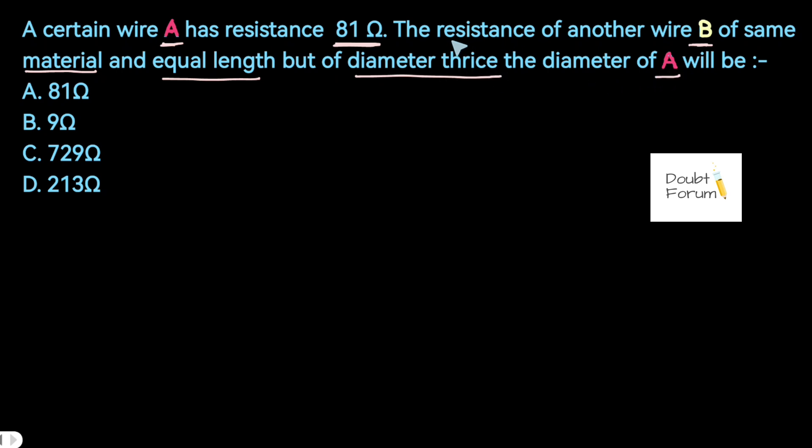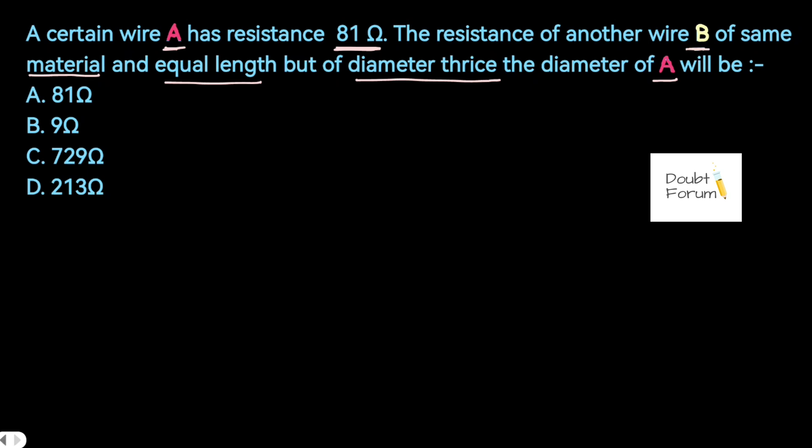So here we have to find out the value of resistance of wire B. Whenever the physical dimension of a conductor is given to us, to calculate the resistance we always use R equals rho L upon A. Here rho is the resistivity, L is the length, A is the area of cross section.